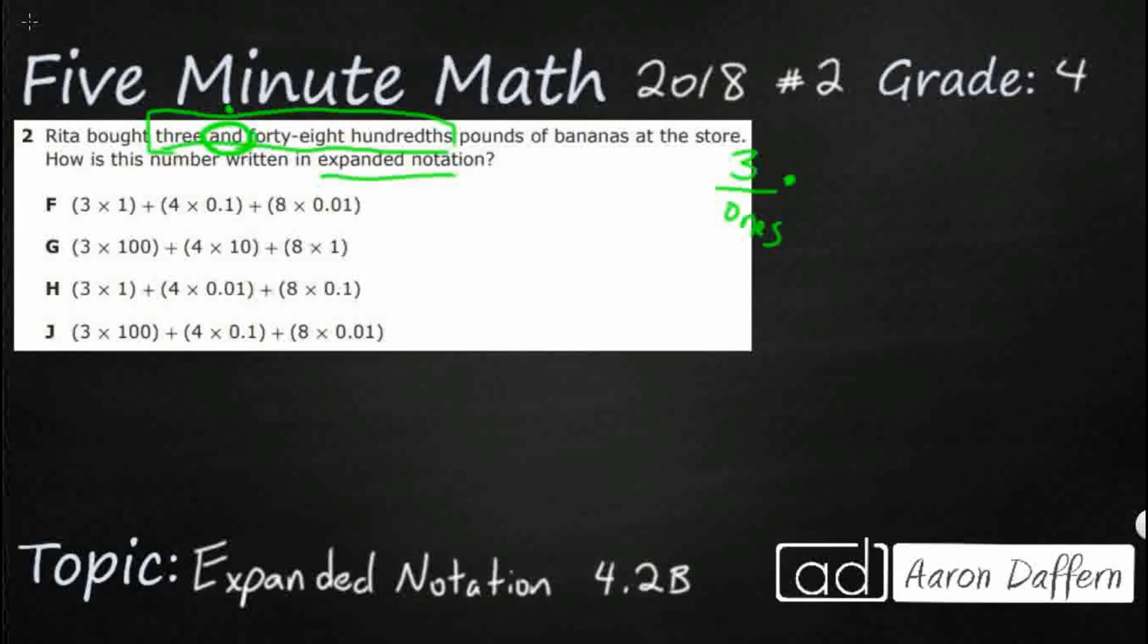And then forty-eight hundredths. Now we need to go over two spots right here to get to the forty-eight hundredths. Let's make sure we understand what our place values are worth. Tenths, hundredths. So there we go. There's my three and that's my 'and' right there. Forty-eight hundredths.